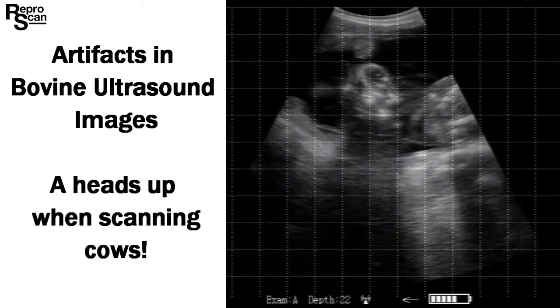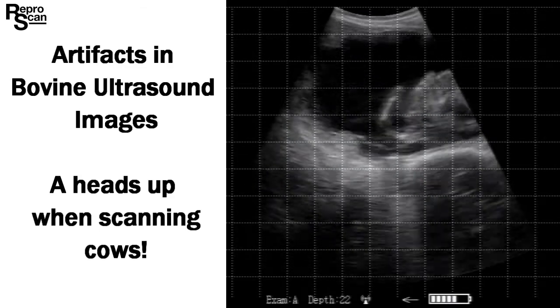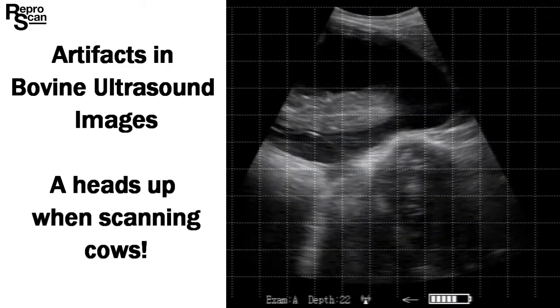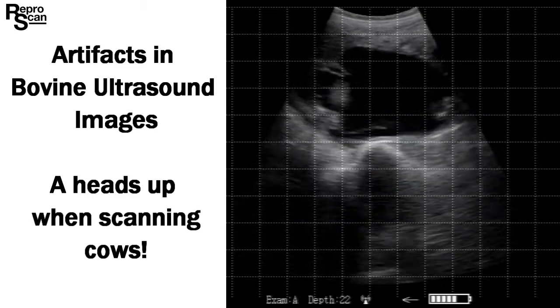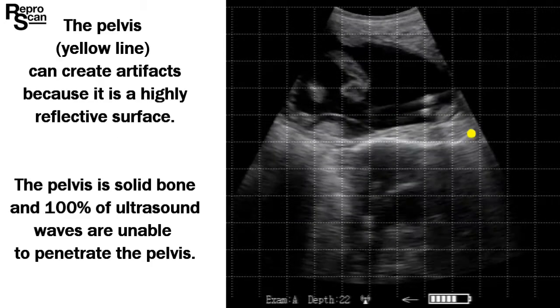Artifacts in bovine ultrasound images — a heads up when scanning cows. The pelvis, shown here in yellow, can create artifacts because it is a highly reflective surface.